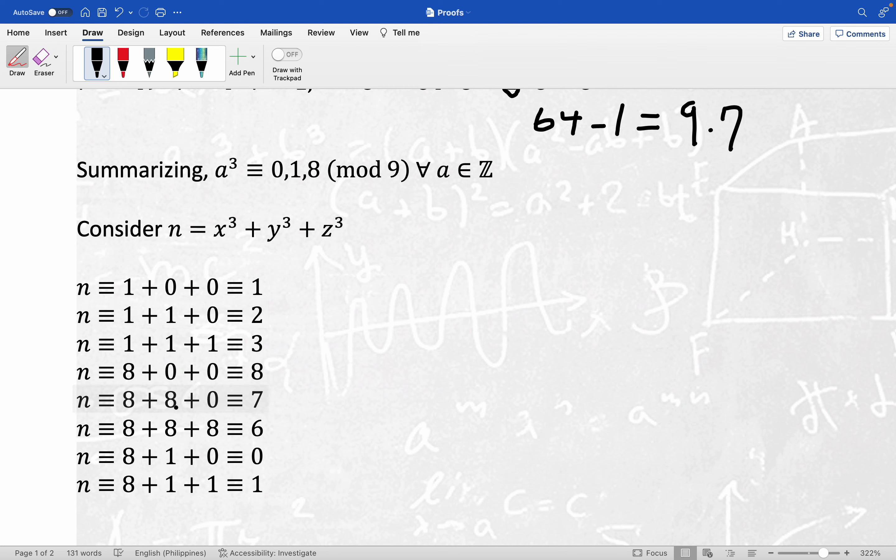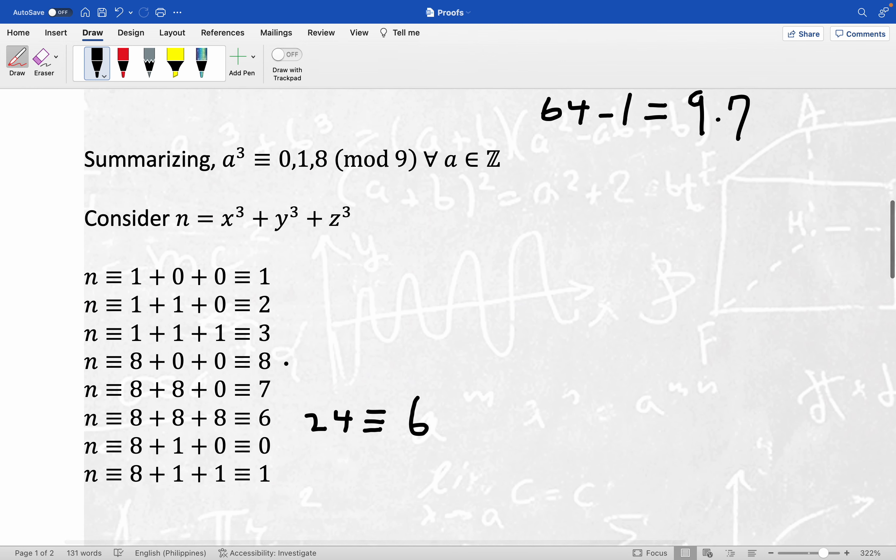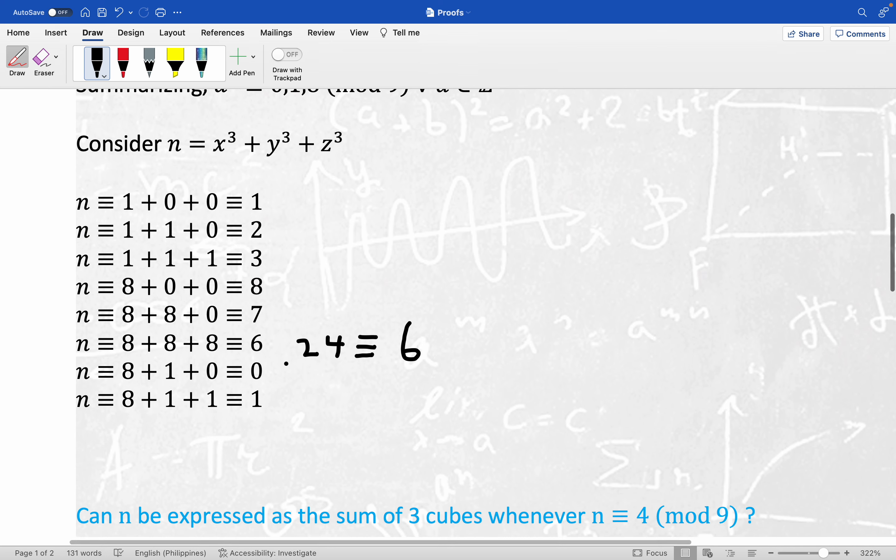Now, right here, 16 is congruent to seven. Okay, 16 minus seven is nine. 24 right here is congruent to six, right? Okay, since 24 minus six is equal to nine times two. But notice that four does get left out. And that was the question that we're trying to answer.